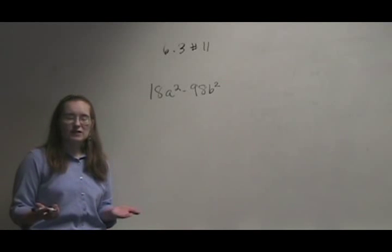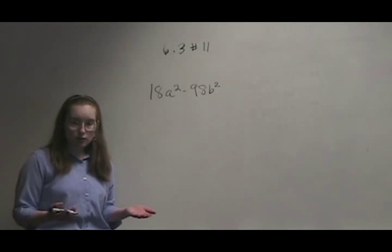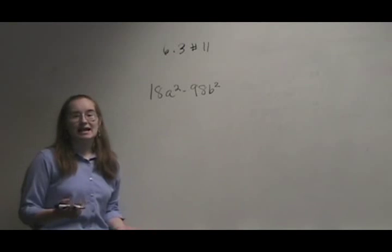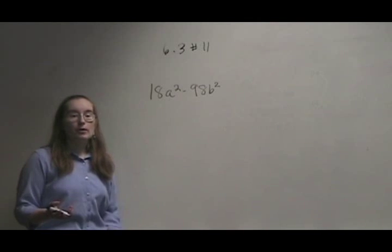With special factors, this tells us we're probably looking at one of the perfect square binomials we just worked with and we've been learning. But if we look at this, we see 18 and 98, they aren't perfect squares. A squared and B squared are. But what do we do?